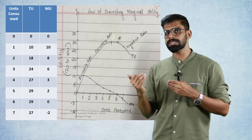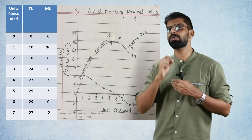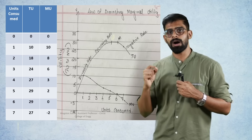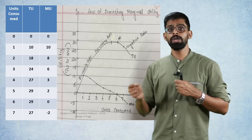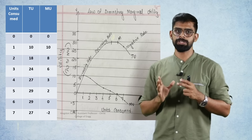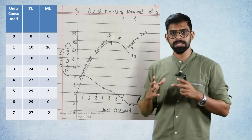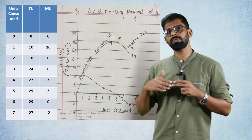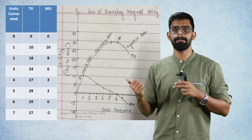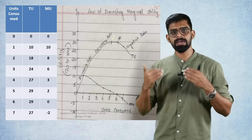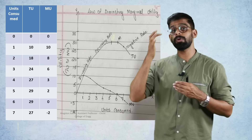The marginal utility values continue to fall: from 6, to 3, to 2, and then to 0. At the sixth unit, marginal utility becomes 0, which is the additional utility of zero. Total utility reaches its maximum point — that is the saturation point. At the seventh unit, marginal utility becomes negative, meaning the consumer experiences discomfort or disutility.